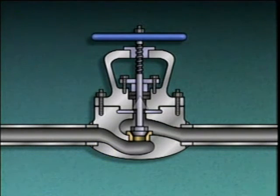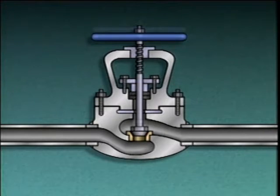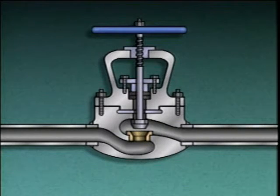The disc is attached to the stem, which in turn is attached to the hand wheel. As the hand wheel is turned, the stem moves. This repositions the disc with regard to the seat and changes the flow through the valve.